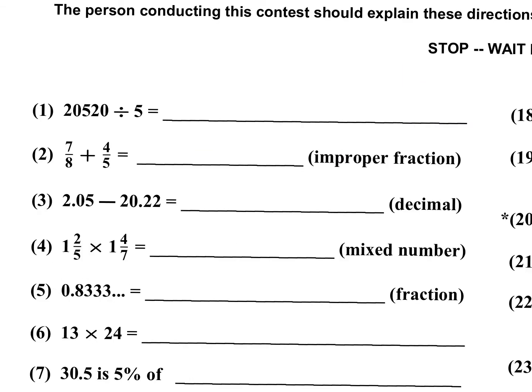Let's take a look at problem number one: 20,520 divided by five. Five goes into 20 four times. And then five goes into five once. Five into two is zero. And then five into 20 is four. So 4,104 would be the answer for that one.